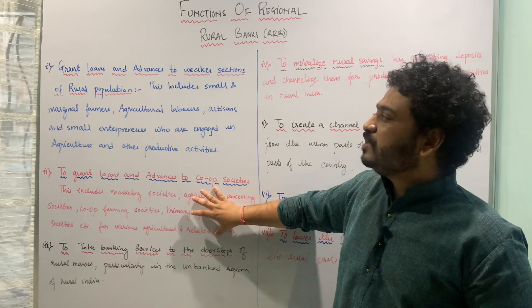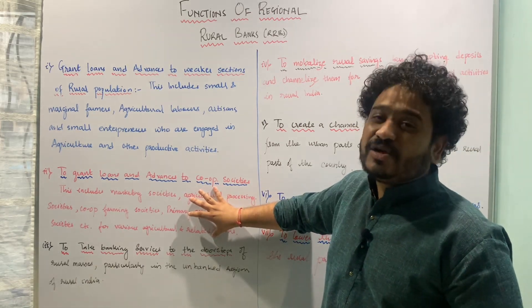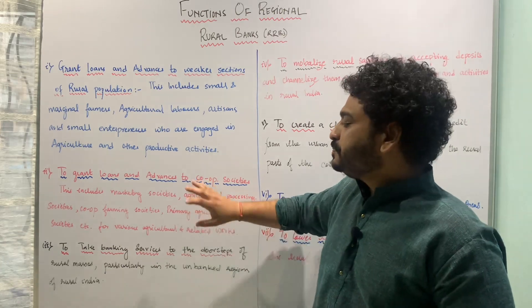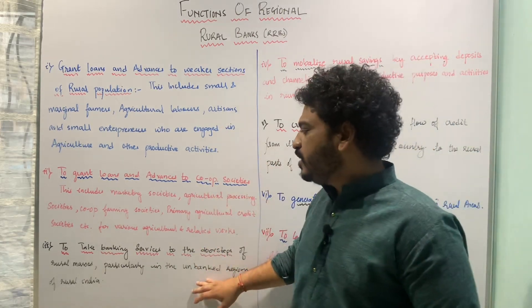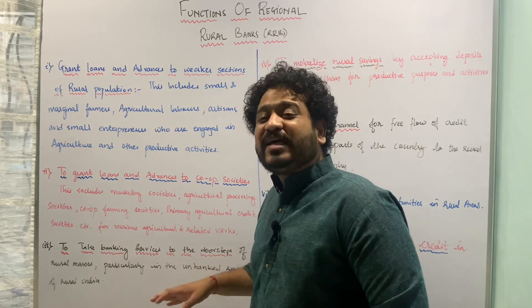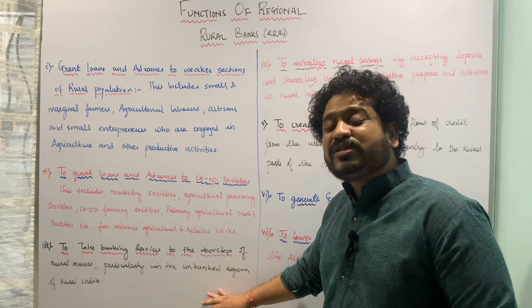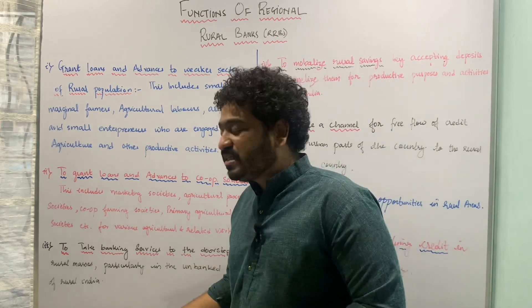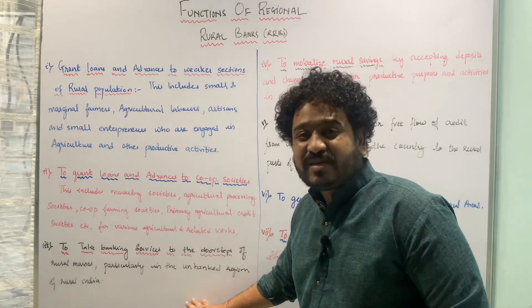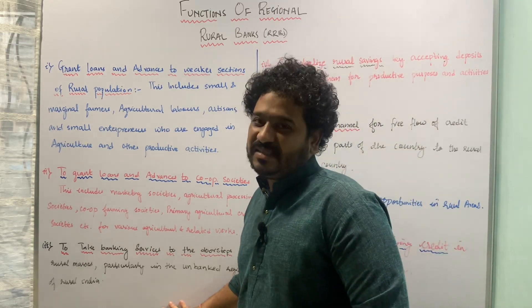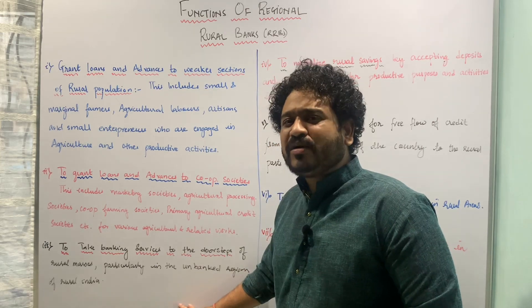Regional rural banks cater to the credit needs of cooperative societies in different forms and shapes. The next function is taking banking to the doorsteps of rural masses, particularly to the unbanked sectors in rural parts of the country. This is a very important function.